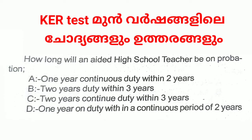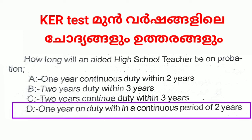How long will an aided high school teacher be on probation? A. Only one year continuous duty within 2 years, B. 2 years duty within 3 years, C. 2 years continuous duty within 3 years, D. Only one year on duty within a continuous period of 2 years. Answer: D. Only one year on duty within a continuous period of 2 years.